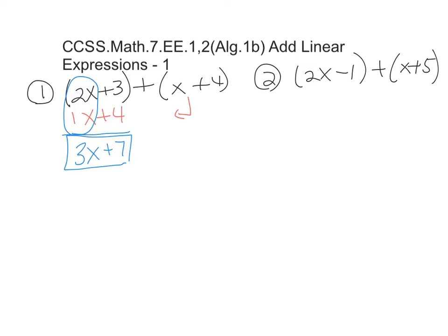So let's go on to number 2. It's a little bit harder because you've got negatives here. So we have 2x minus 1 in one group, and we have x plus 5 in another group. And you're going to march it down here and line up your x's with x's and numbers with numbers.